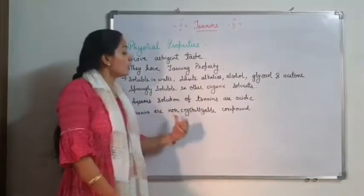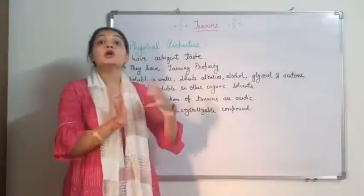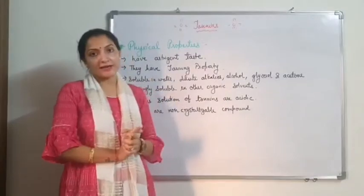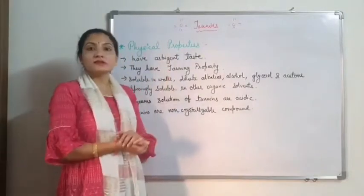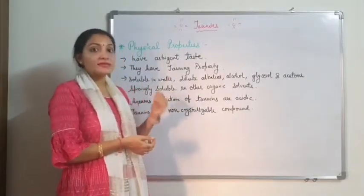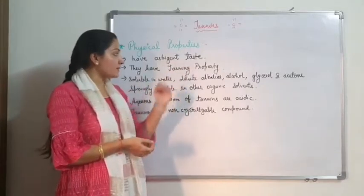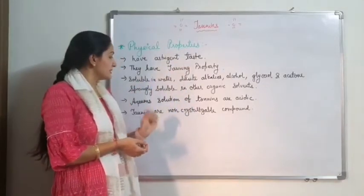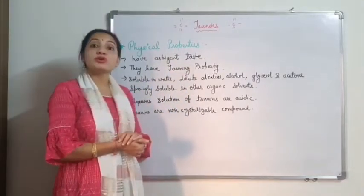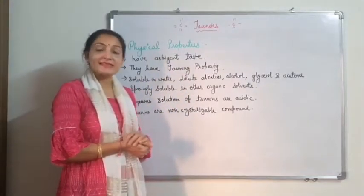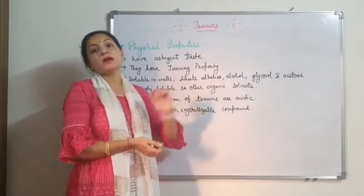Tannins are non-crystalline compounds. So to summarize the physical properties of tannins: they have an astringent taste, a tanning property, specific solubility, their aqueous solution is acidic, and they are non-crystalline compounds.